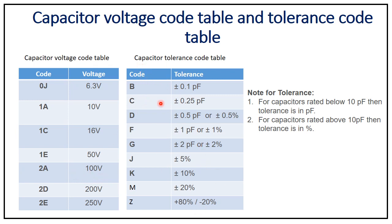The capacitor tolerance code table uses letter codes B through Z. For capacitors rated below 10 picofarads, tolerance is expressed in picofarads; for those above 10 picofarads, tolerance is expressed as a percentage. Codes are: B = ±0.1 pF, C = ±0.25 pF, D = ±0.5 pF or ±0.5%, F = ±1 pF or ±1%, G = ±2 pF or ±2%.